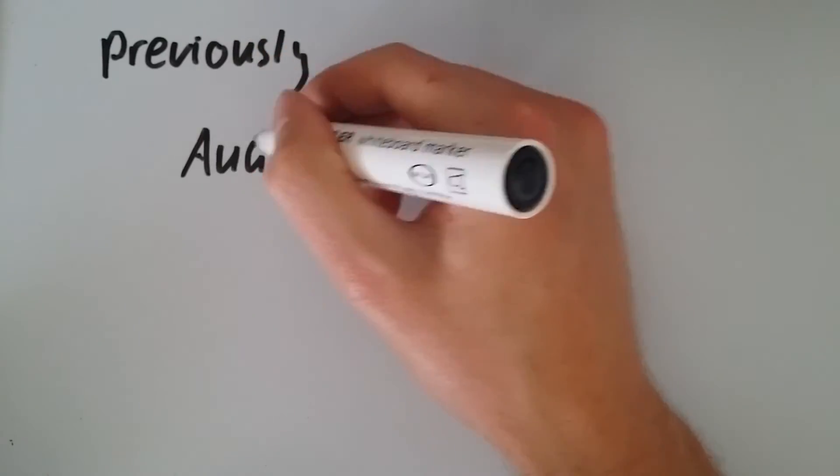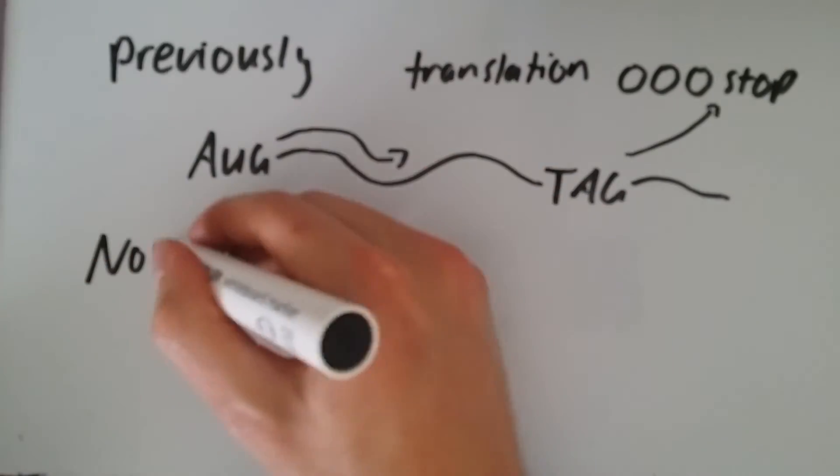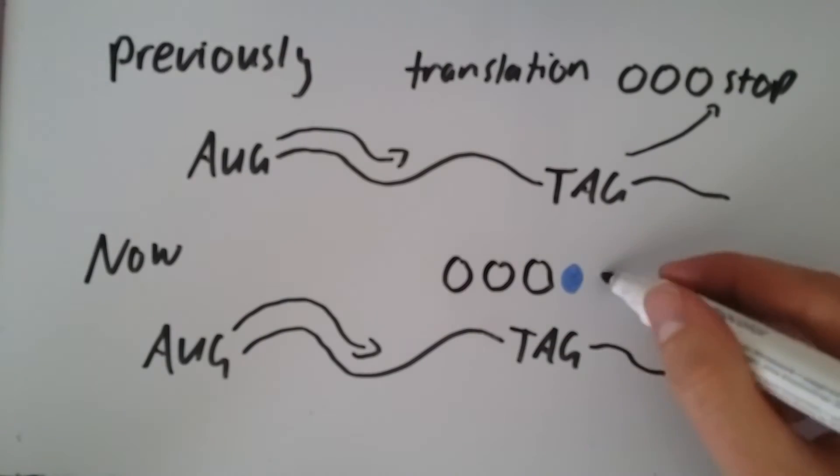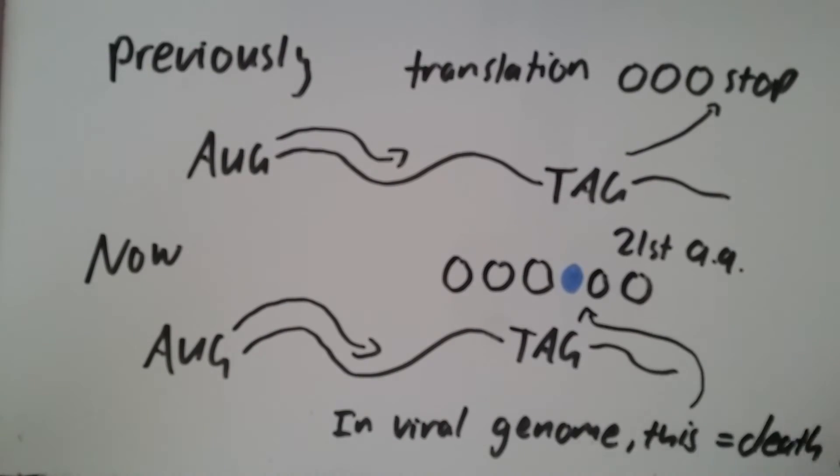These strains could now have their TAG stop codon reassigned to code for a 21st amino acid. With a reassigned stop codon, these cells would now be resistant to viruses, as viral genomes would be mistranslated.